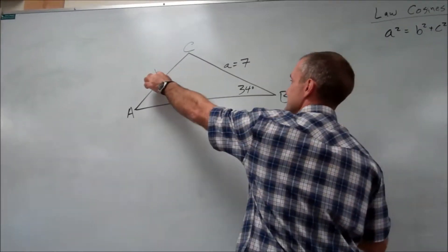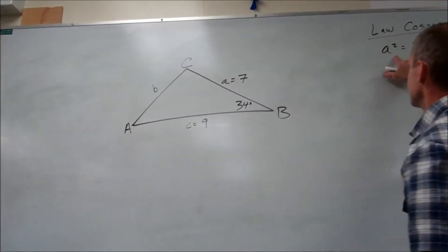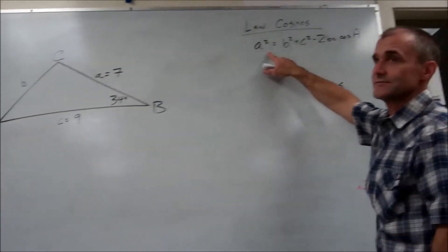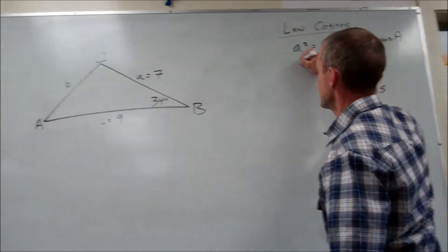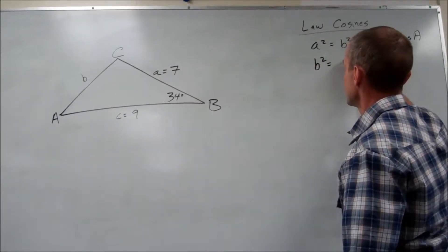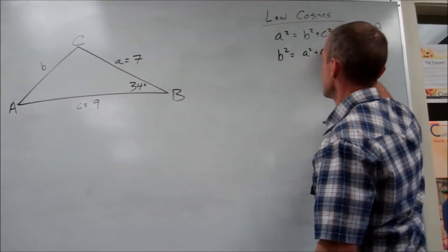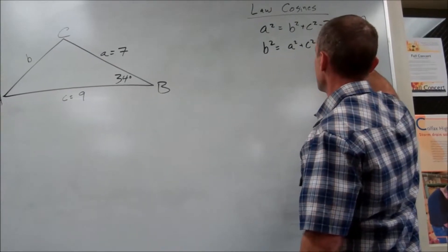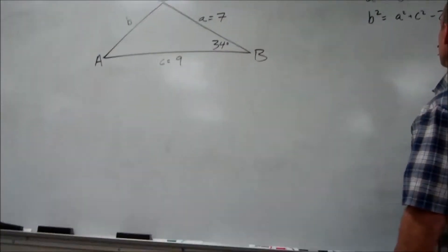So this is side B, this is angle B. So I'm going to actually write a different form of the law of cosines. So B is going to be right here.